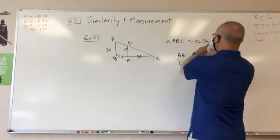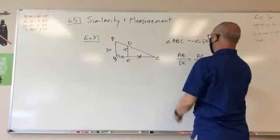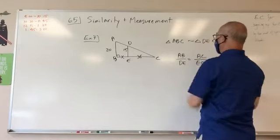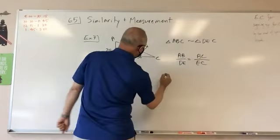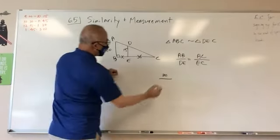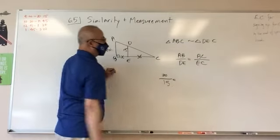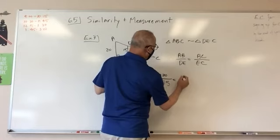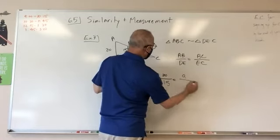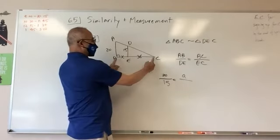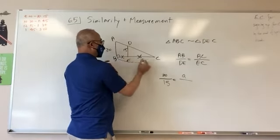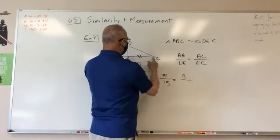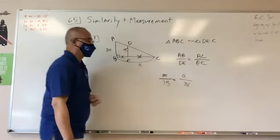So, BC to the corresponding part of this would be this guy here. So, it would be, so here we go. BC is EC, right? AB is DE. BC is EC. Okay, so AB is 20, to DE was 15, BC is the one that I do not know, so we'll call that A, just to differentiate it from this X here, right? Because we're calling this guy A, right here, so this guy from here to here, we're calling A. So this is A, and then EC is 36. Okay.